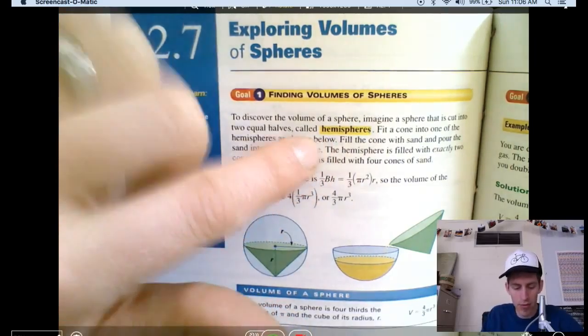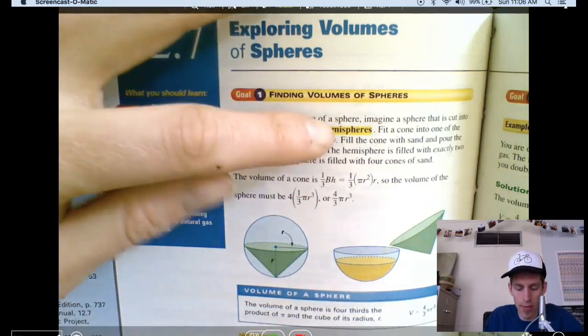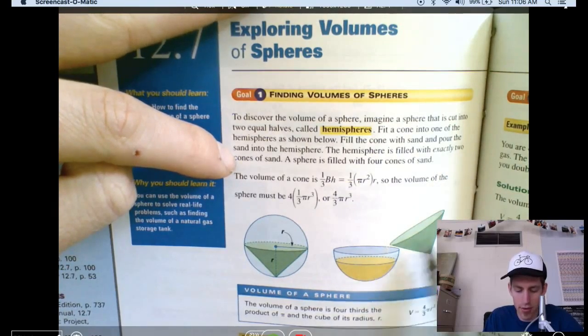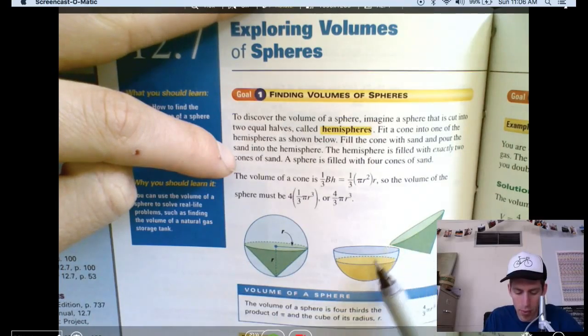The hemisphere, we have found, the hemisphere is filled with exactly two cones of sand. So if you fill the cone up once, pour it in, fill it up again, pour it in, you will fill that hemisphere perfectly.